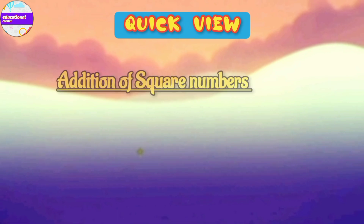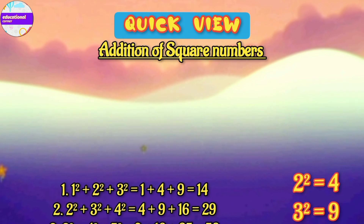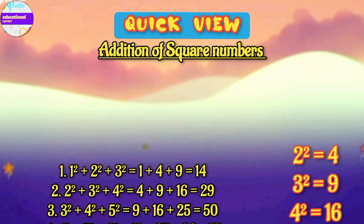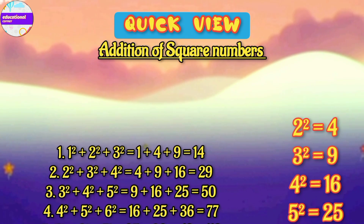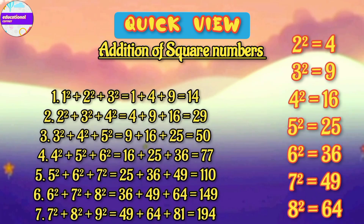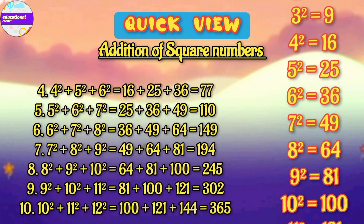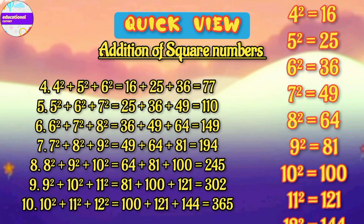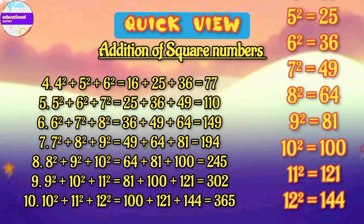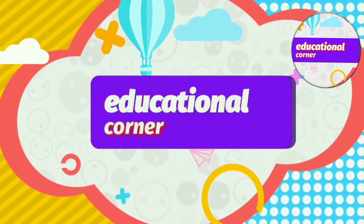Quick recap: today we learned addition of three consecutive square numbers. On the right we showed the squares; on the left we wrote the math equation, which is easier to understand. Hope you liked the video — bye!